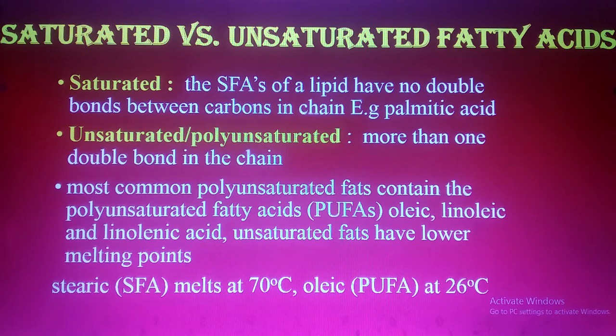I have some examples of saturated and unsaturated fatty acids for you. You can see here the saturated fatty acids with their chemical formulas and melting points: butyric, palmitic, and stearic acids — these are saturated fatty acids. And the unsaturated ones: oleic, linoleic, and linolenic acids — these are unsaturated fatty acids.